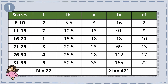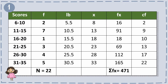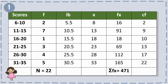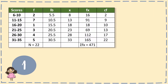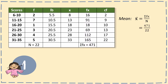Now that we have completed the table, we can determine the three M's. The mean is expressed through the formula x equals summation of fx over n. So we have 471 divided by 22, and the answer is 21.41.